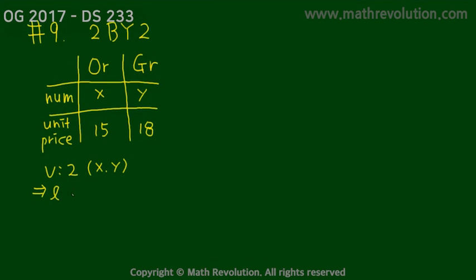We'll need two equations to solve for these two variables. Now, in condition 1, we have one equation. In condition 2, we have another equation. For a total of two equations, so, mathematically speaking, the probability that C is our answer is very high. Well, let's confirm. We don't have to calculate, but let's confirm by looking at the two equations.